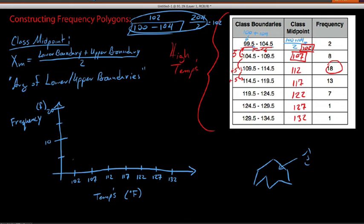Okay. So here's how this works. We say at 102, which is the class midpoint of the first class, we had a frequency of 2. So what we'll do is we'll go over 102. We'll just go up to 2. And instead of drawing a bar, we're going to draw a dot.